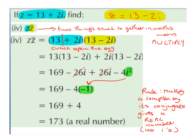A shortcut way to do this is to square the real part — squaring 13 gives us 169 — and square the imaginary coefficient, which is 2, giving us 4. Then adding them gives us 173.